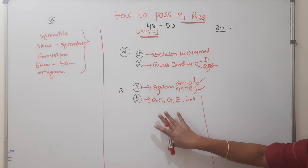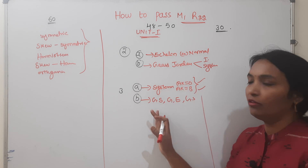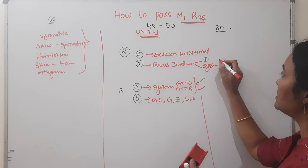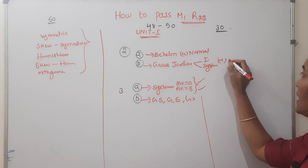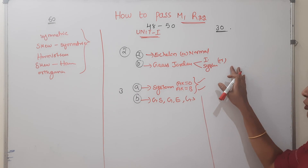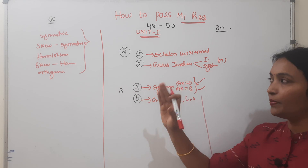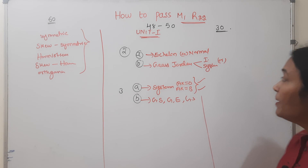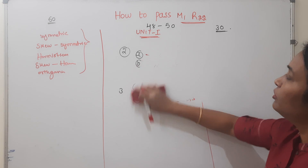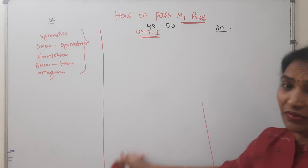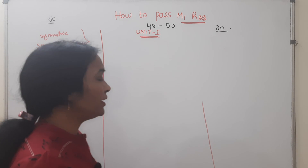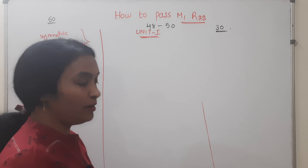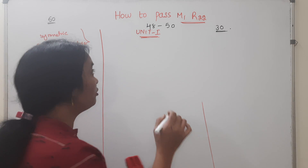There is one small property — Hermitian or skew-Hermitian — but there is no big chance it comes in a tough paper. If you prepare in this pattern, at least 30 marks will be achievable. Madam, this is not bad. I will tell you — if you are well prepared, they will be perfect.